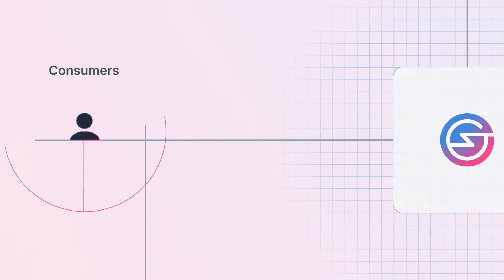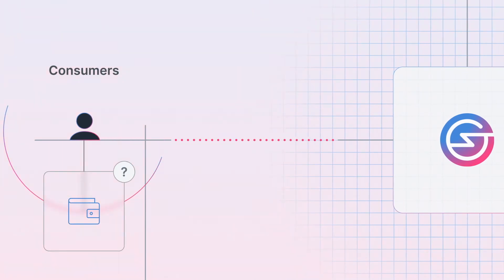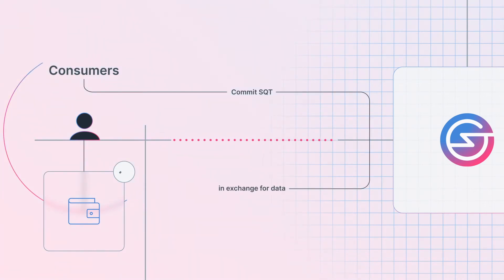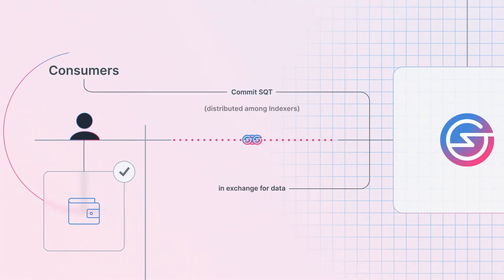Consumers of data, such as a wallet who needs information for account balances and transactions, will commit SQT in exchange for this data from indexers, and this SQT will be distributed among indexers.